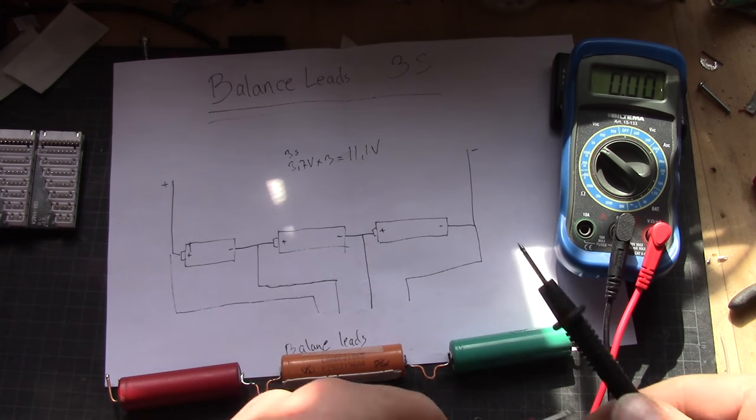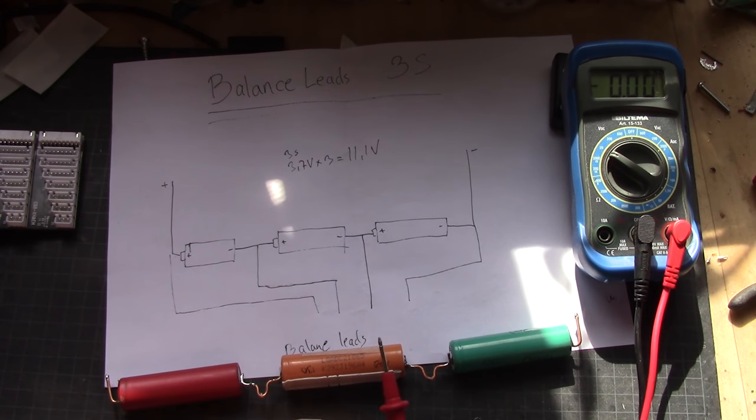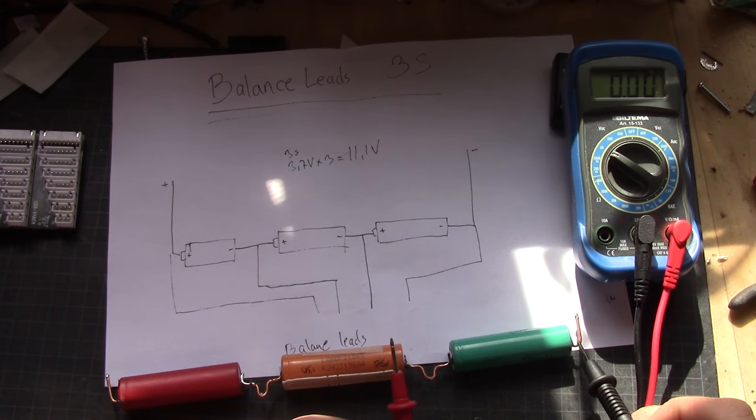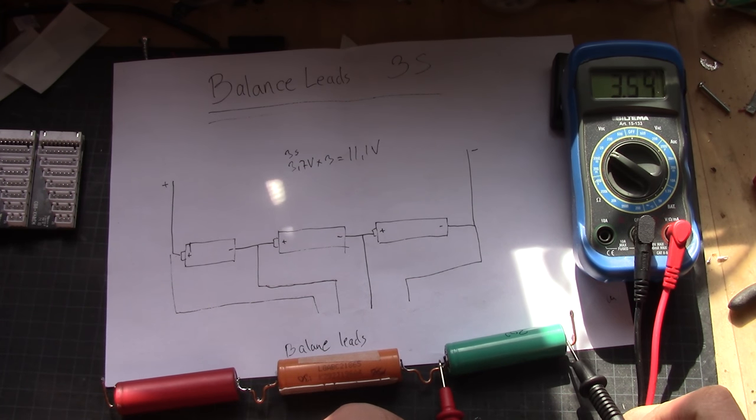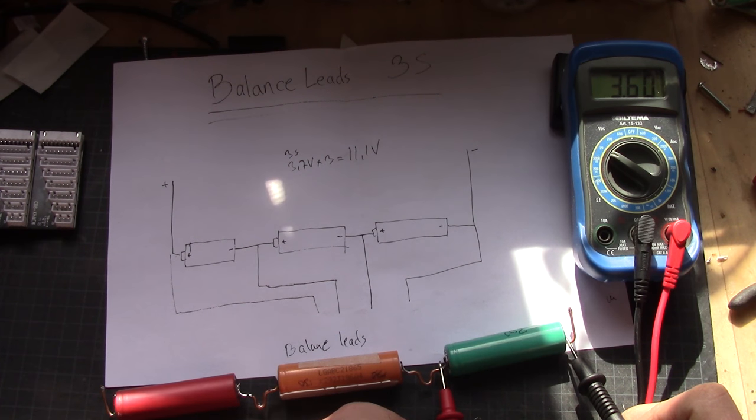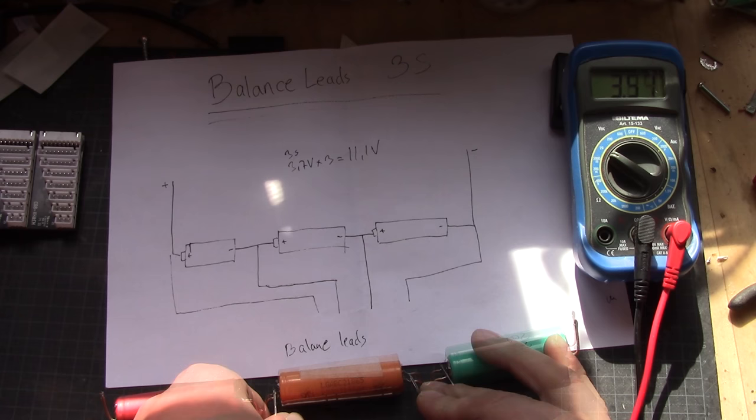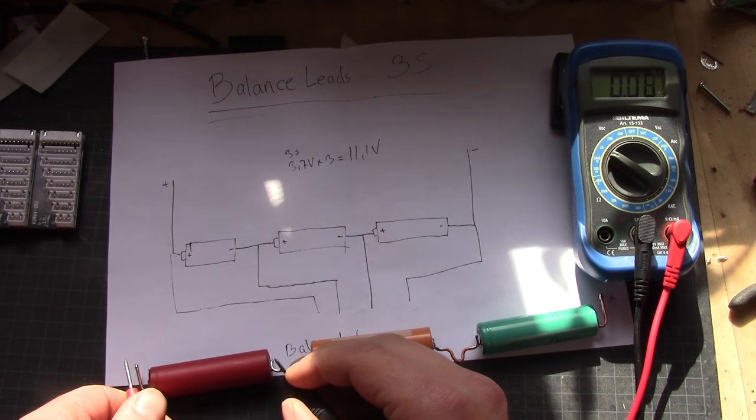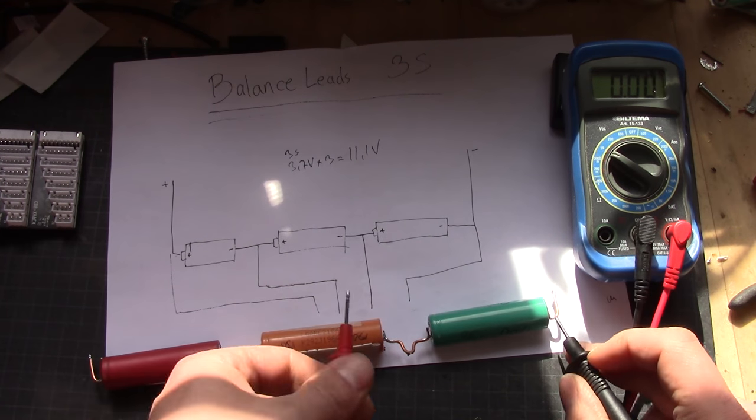And before we start with actually mounting the cable, we need to cross check the voltages of the battery. So this is the negative end, so we start from this end here and we'll see that the first cell is roughly 3.6, second one 3.9, and the last one will measure around 4 volts.